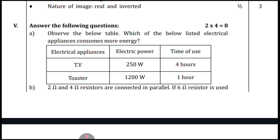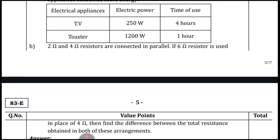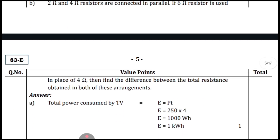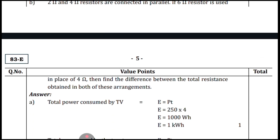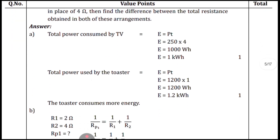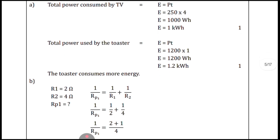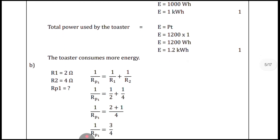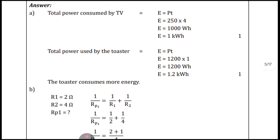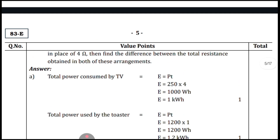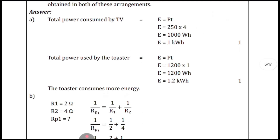Question eleven: observe the below table — which of the listed electrical appliances consumes more energy? Part B: a 2-ohm and 4-ohm resistor are connected in parallel. If a 6-ohm resistor is used in place of the 4-ohm, find the difference between the total resistance obtained in both arrangements. Calculate both ways for one mark each. The toaster consumes more energy. Here is the answer for part B.